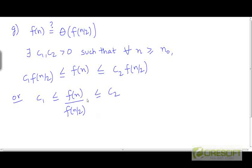Since c₁ and c₂ are positive constants, this is basically constraining the ratio of f(n) and f(n/2) to be some positive constant, and to always lie between two constants c₁ and c₂.